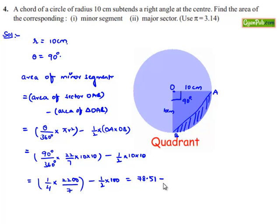The area of the minor segment equals 78.51 minus 50, which is 38.51 centimeter square.